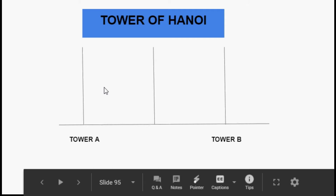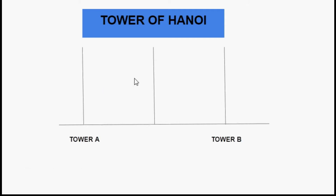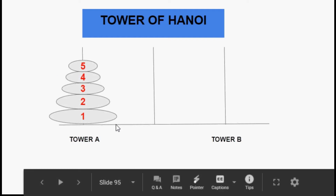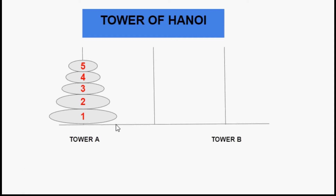This is what the Tower of Hanoi problem looks like — we have three rods or three towers and we can have n number of discs. In this example I have taken five discs, but we can have less than five or more than five number of discs.